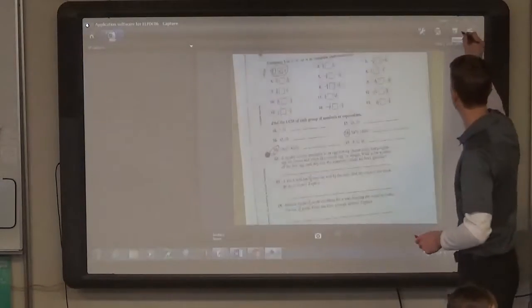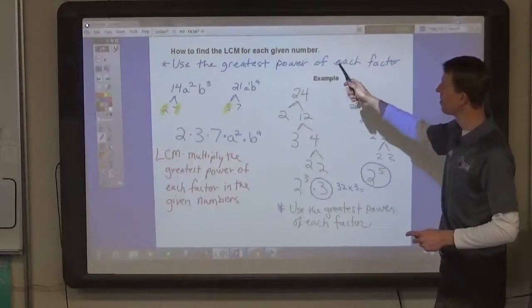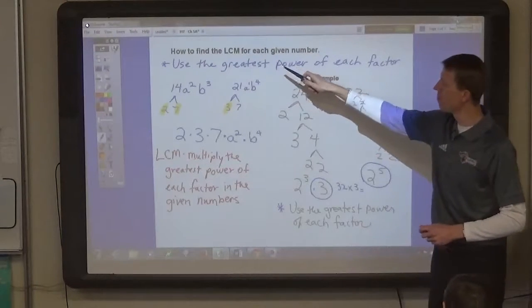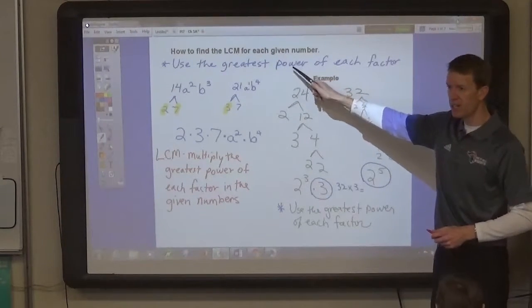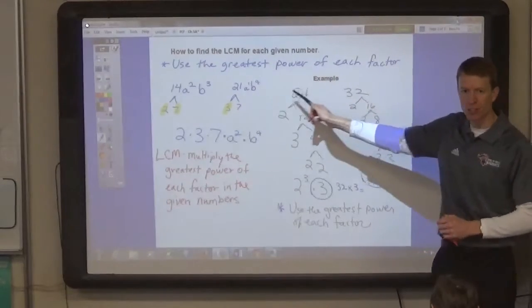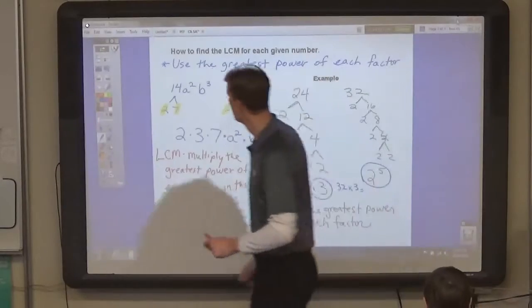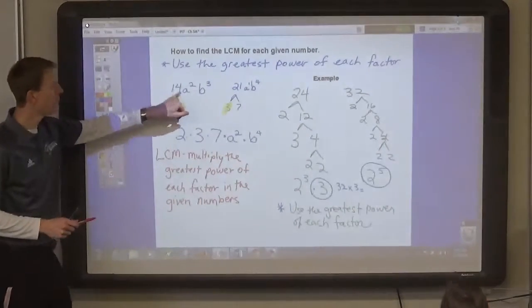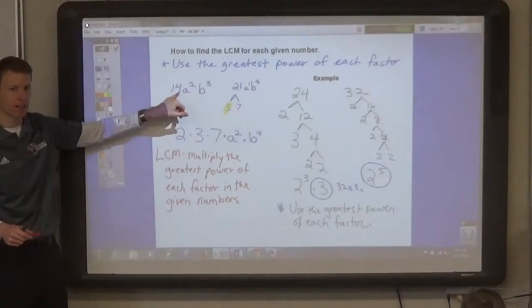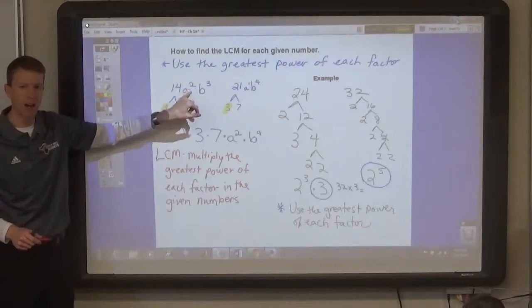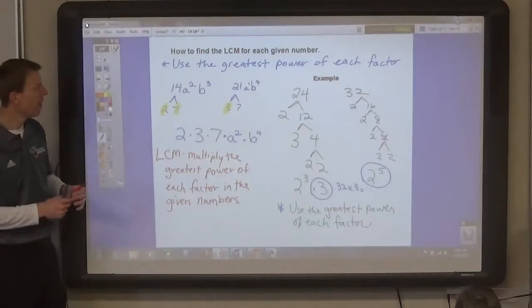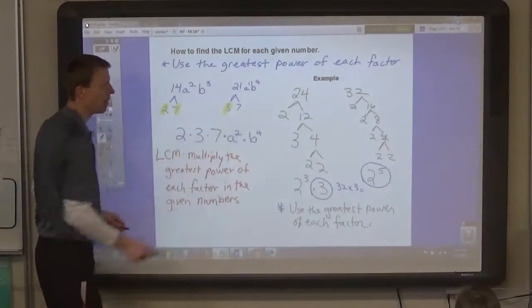So, let's go back to your notes. What we're doing is, we're finding the lowest common multiple, which is the greatest power of each of the factors that go into these numbers. So, if you're given a number like this with variables in it, these variables have powers. And so, you find all the factors by making a factor tree.